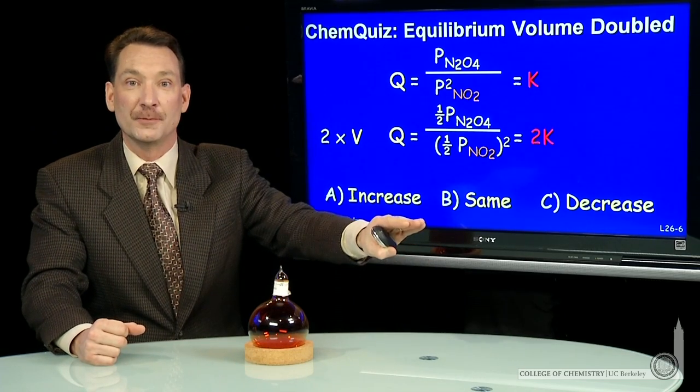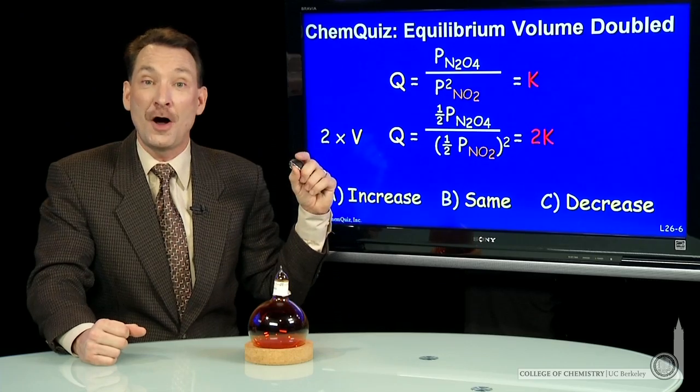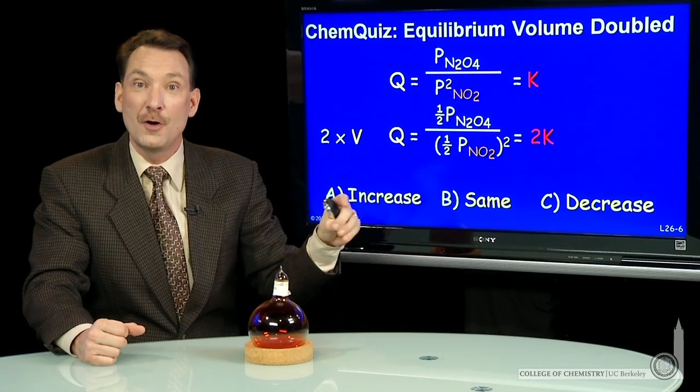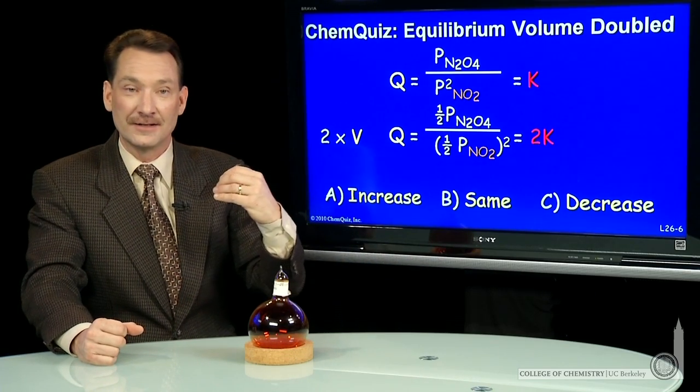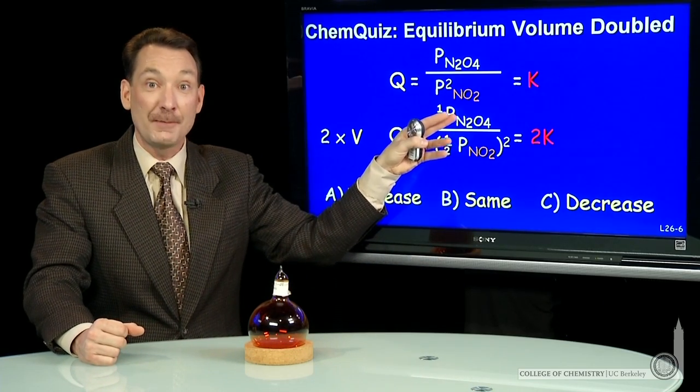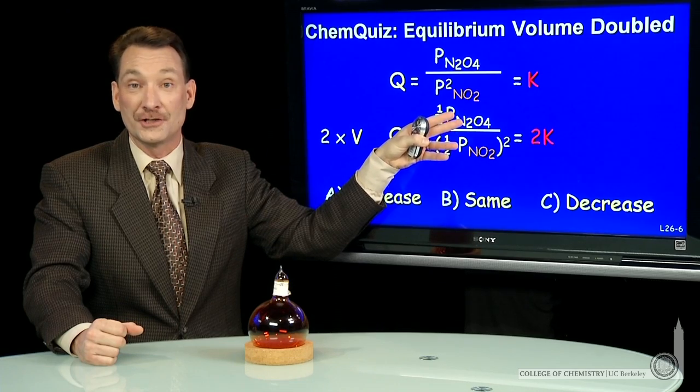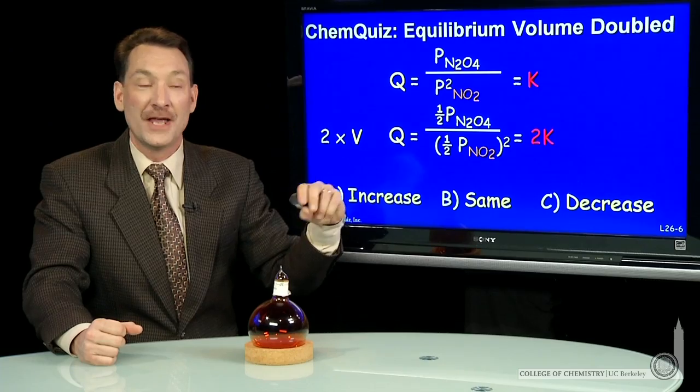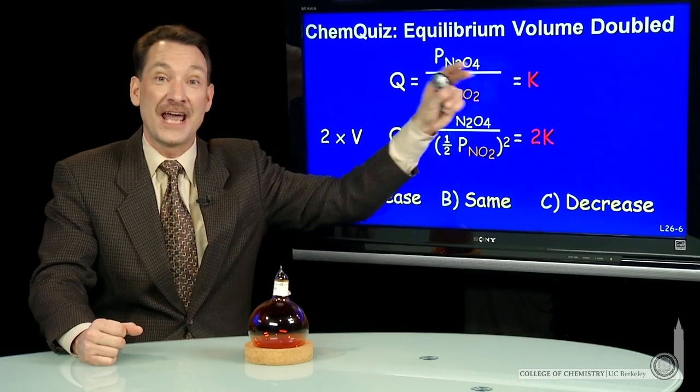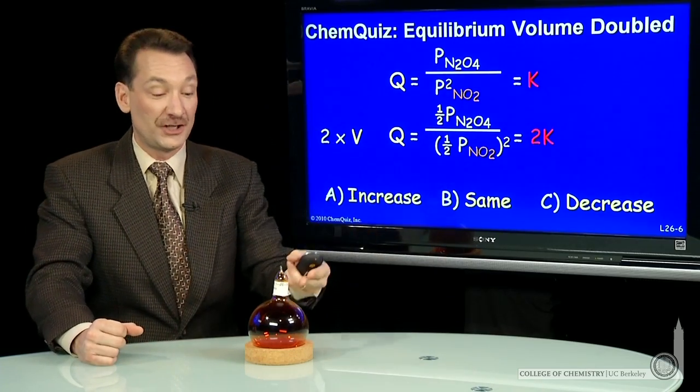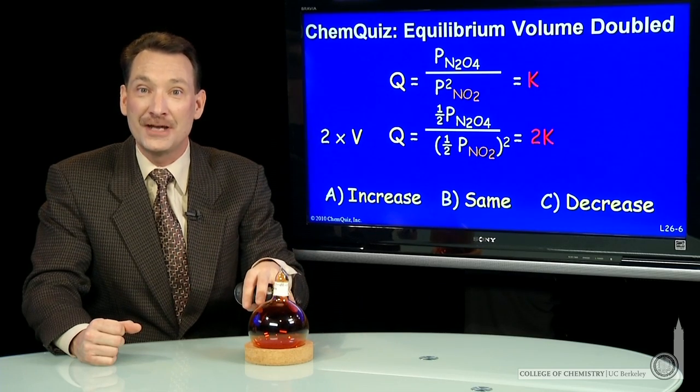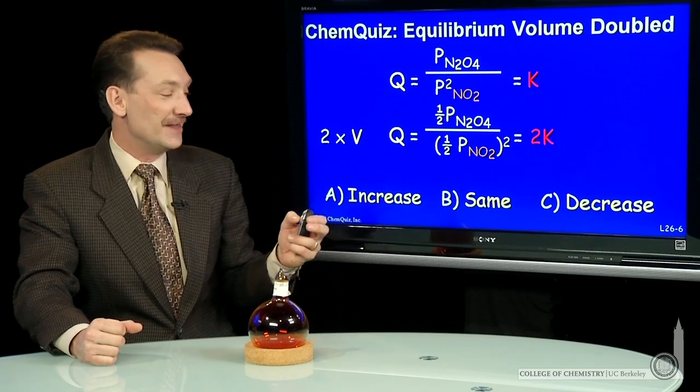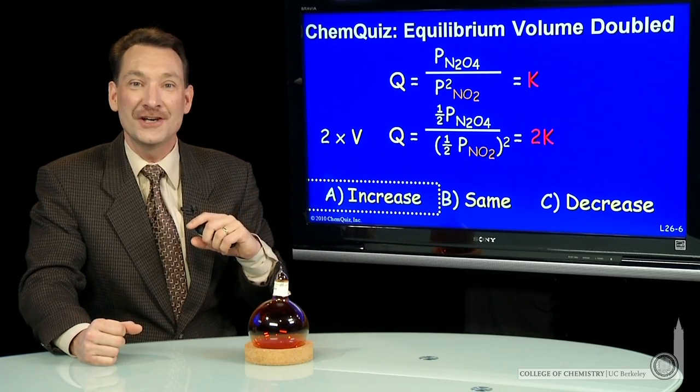And I want to go back towards equilibrium, so I need to make Q smaller. It's 2 times too big. Need to make it smaller. How do I make it smaller? Well, I have to shift back to reactants. The products are on top, making the products bigger would make Q larger. Making products smaller and reactants bigger would make Q smaller. And I want Q to get smaller, to go back towards K. So I'll shift back toward the reactants, and the reactants are the brown gas. So I'll get darker as I shift towards equilibrium in this case. The correct answer here is increase.